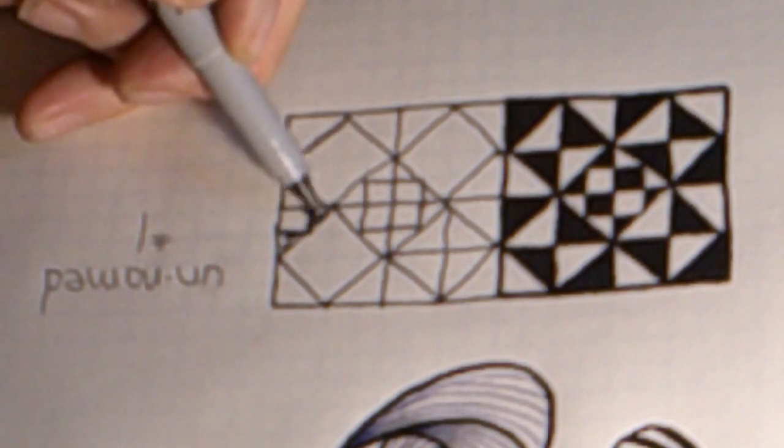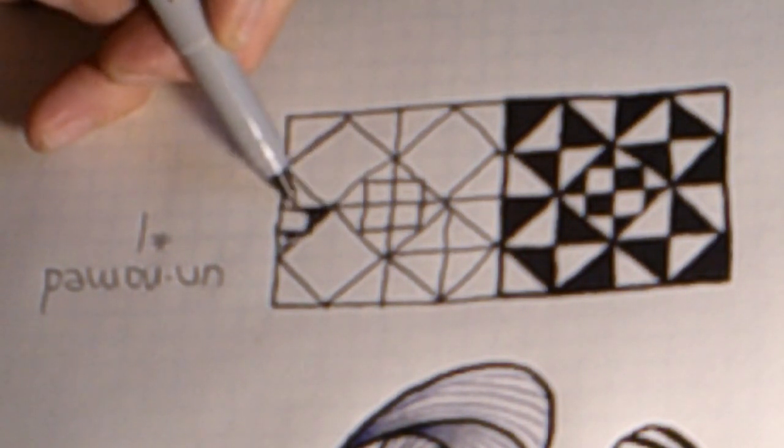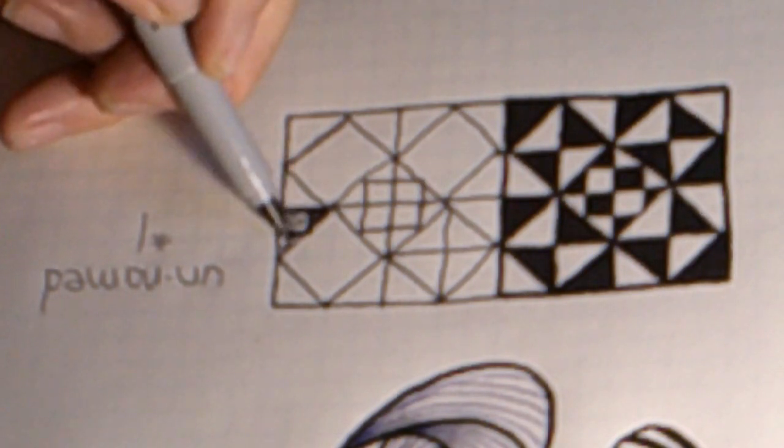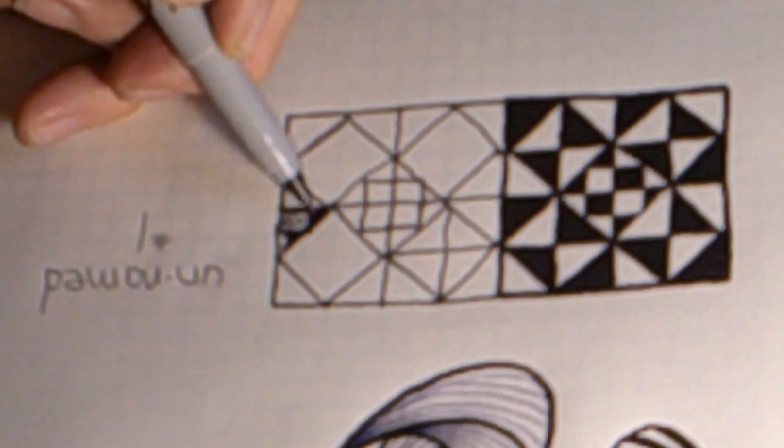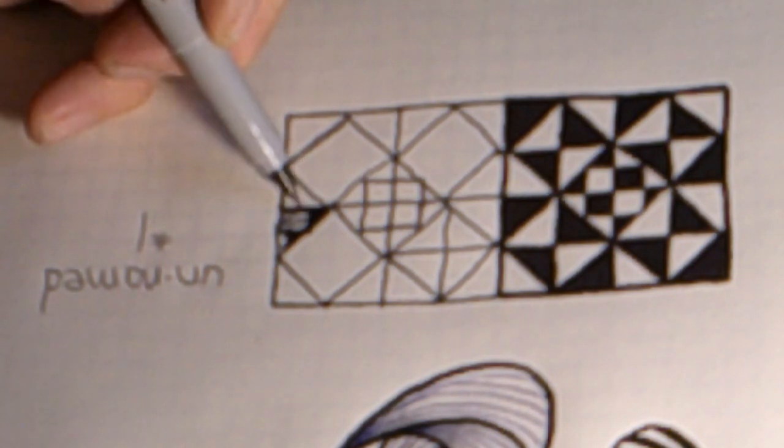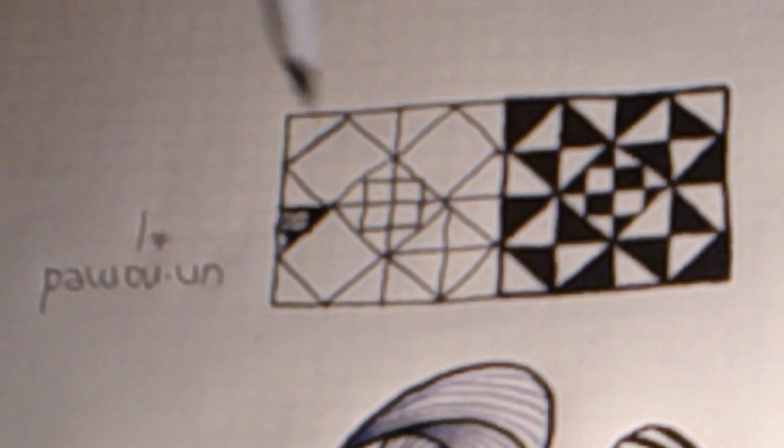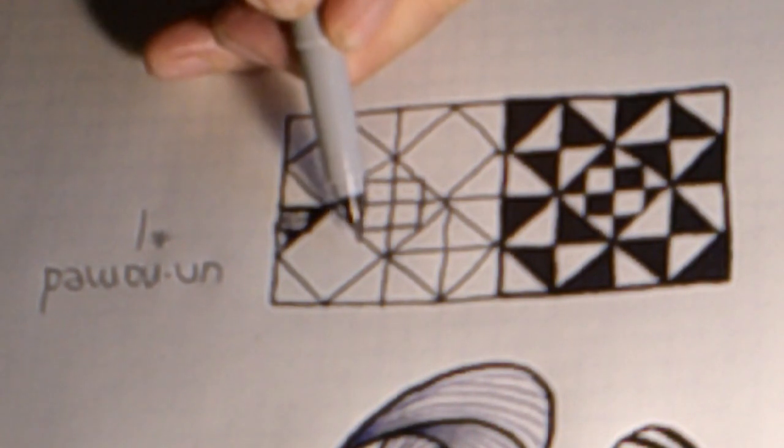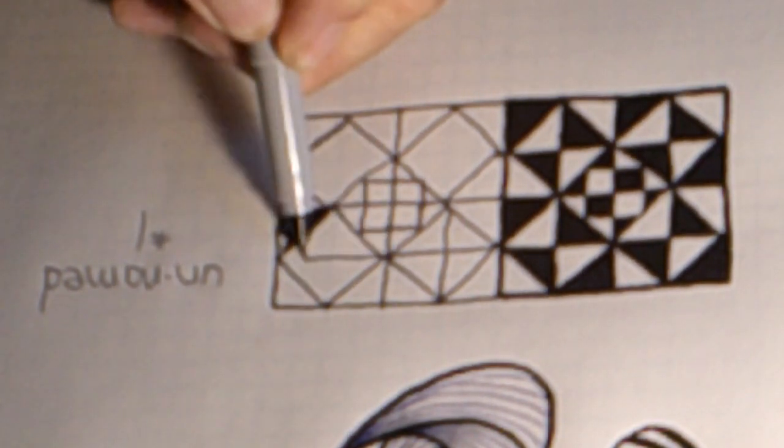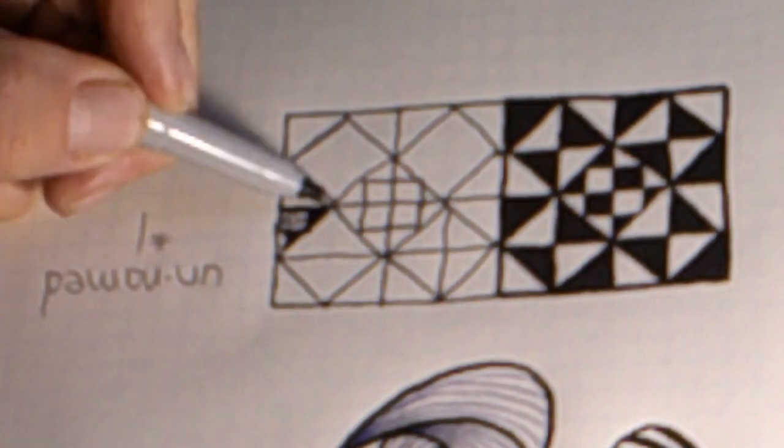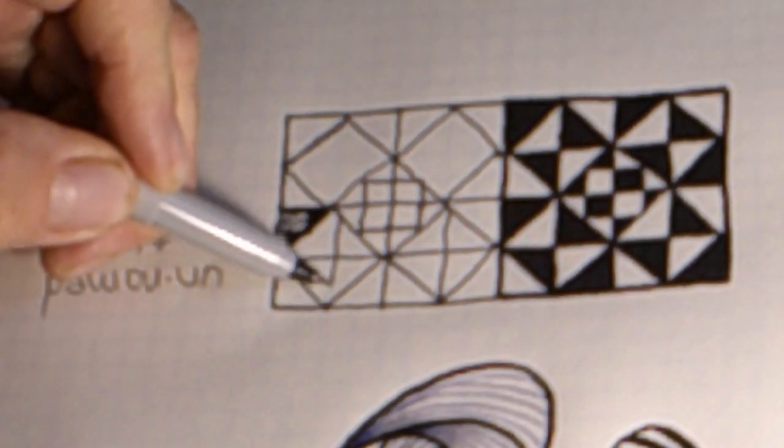And the next step, we're going to color every other area, whether it be triangle... Oops, I missed a step. I want to go ahead and finish out my diagonals in the squares in the center.